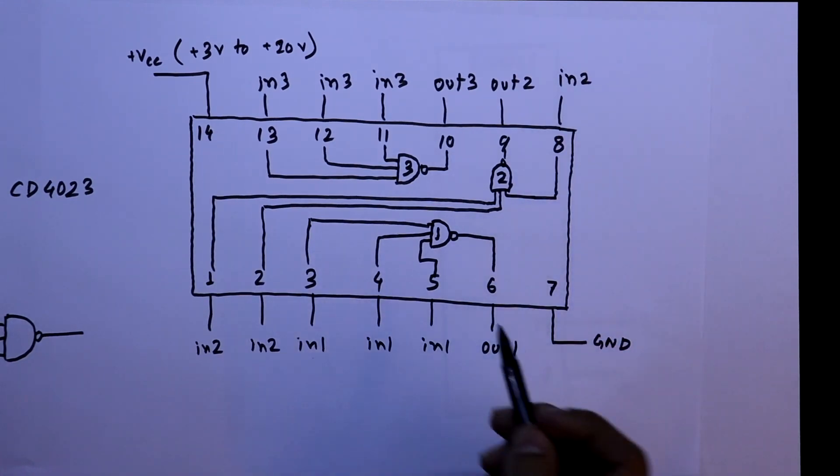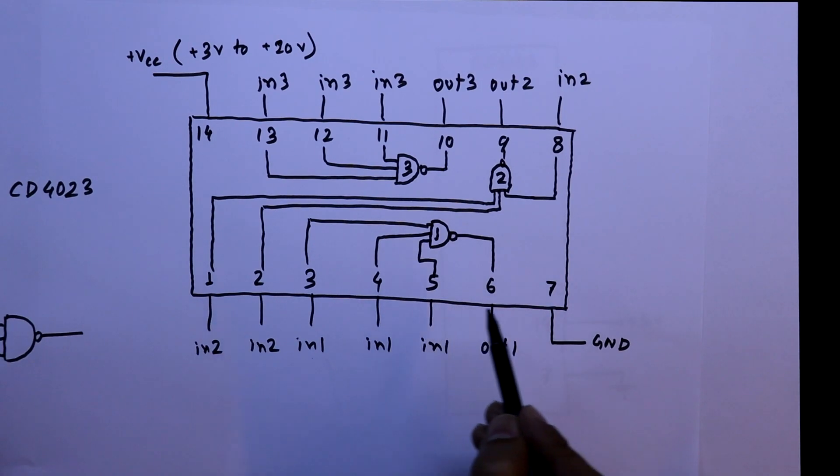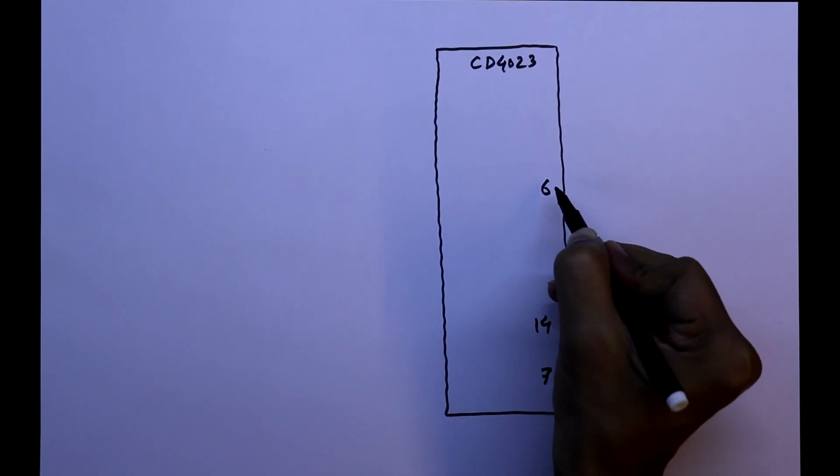As we are going to use gate 1, the input will be 3, 4, 5 and the output is pin number 6. So, here it is pin number 6. And with this we are going to connect an LED.